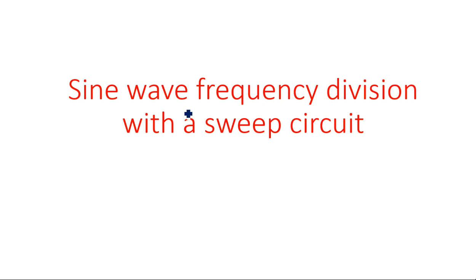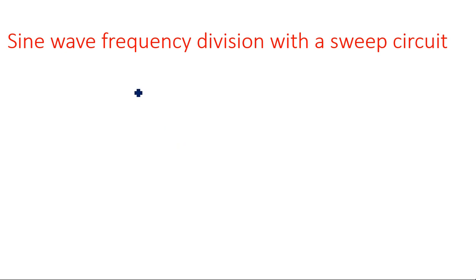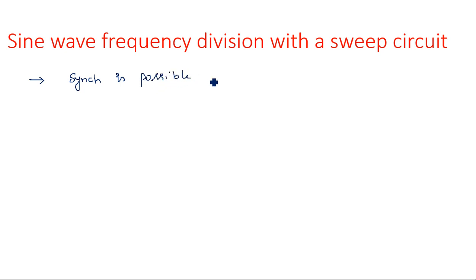In this video, I'm going to explain sine wave frequency division with a sweep circuit. In the previous video, I started the symmetrical synchronization concept where we saw all three conditions: t greater than zero, t less than zero, and t equal to t-naught. The main advantage of sine wave synchronization over pulse synchronization is that synchronization is possible for all three cases.